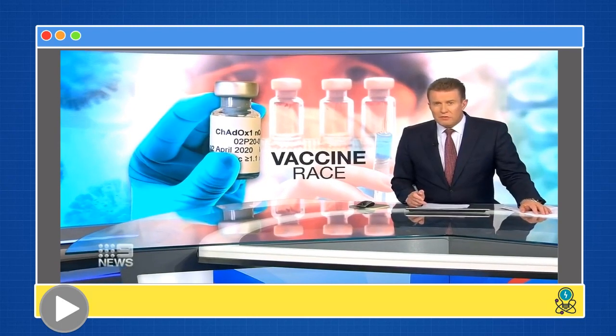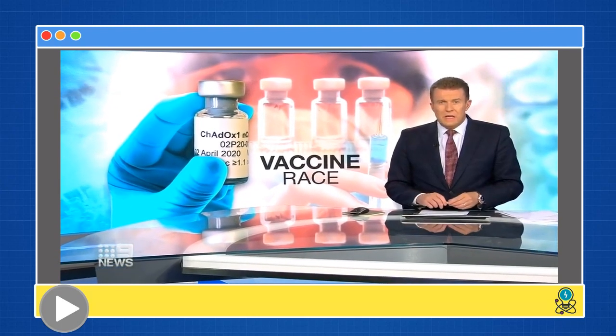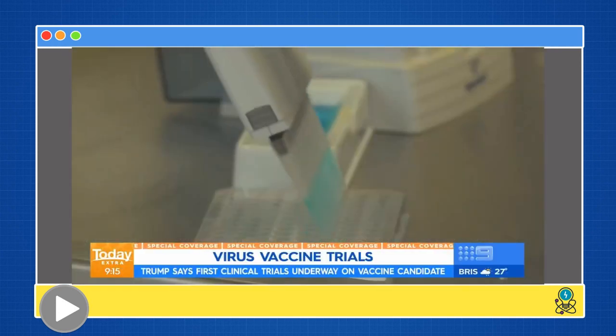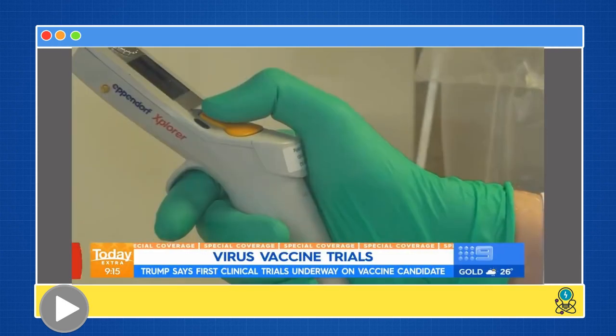The United Kingdom says it's fast-tracked a coronavirus vaccine, which will be trialed in humans from tomorrow. First clinical trials are underway for a vaccine candidate for coronavirus. And if we really want to get back to normal, a coronavirus vaccine is the holy grail.